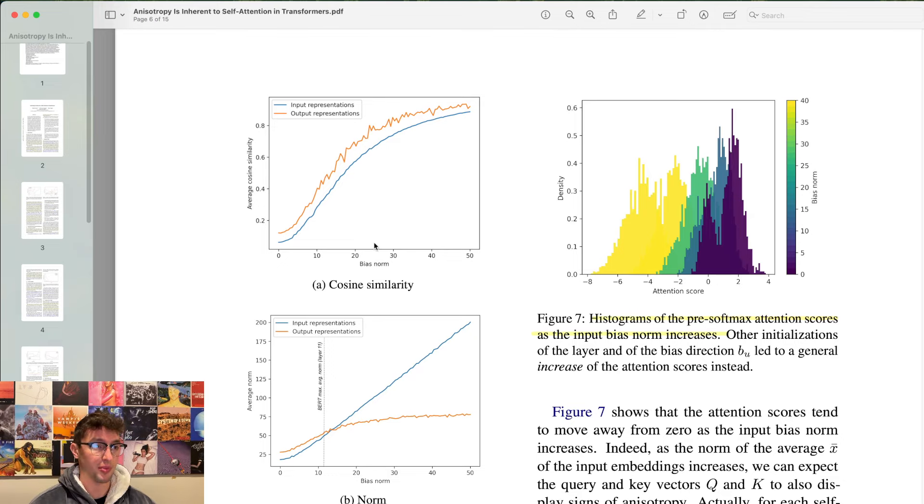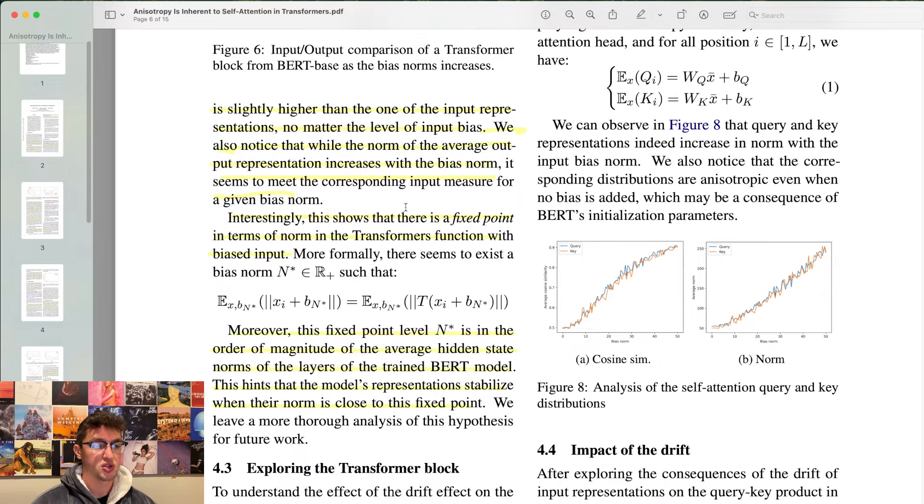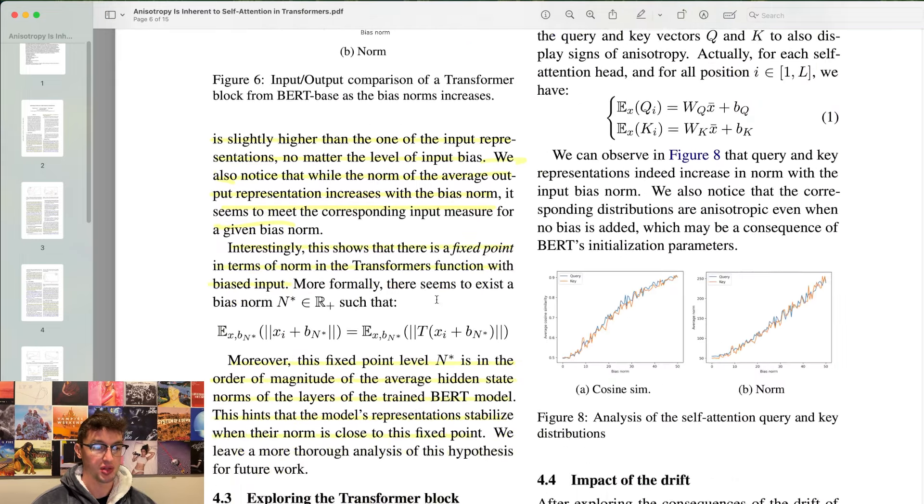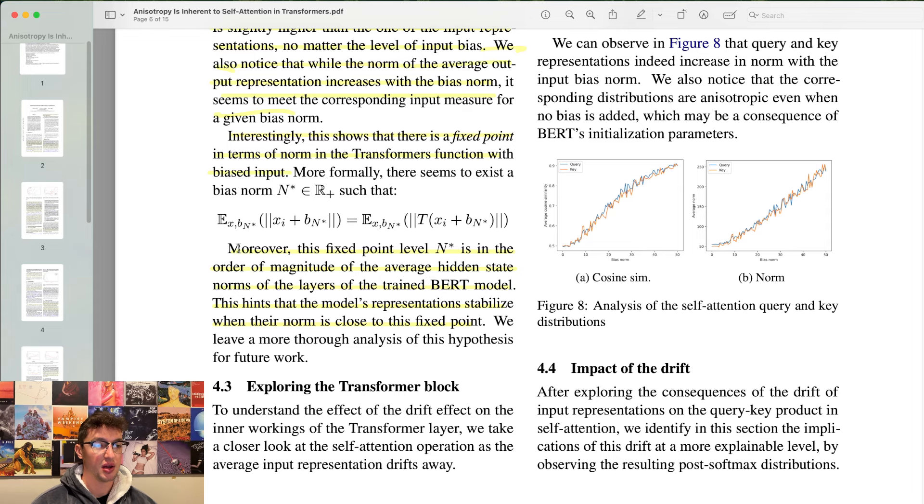We also noticed that while the norm of the average output representation increases with the bias norm, it seems to meet the corresponding input measure for a given bias norm. I think they were adding an artificial bias term in there. I'm not sure if this is an actual normal model behavior, but just a test relationship. Interestingly, this shows that there is a fixed point in terms of the norm in the transformers function with biased input. So here if we do bias norm, average norm is this bottom one. We find that the output representations level out. They really don't want to go past a certain level of norm, whereas the input you can keep raising the norm with your bias term experimentally, and it'll just level out in terms of the output.